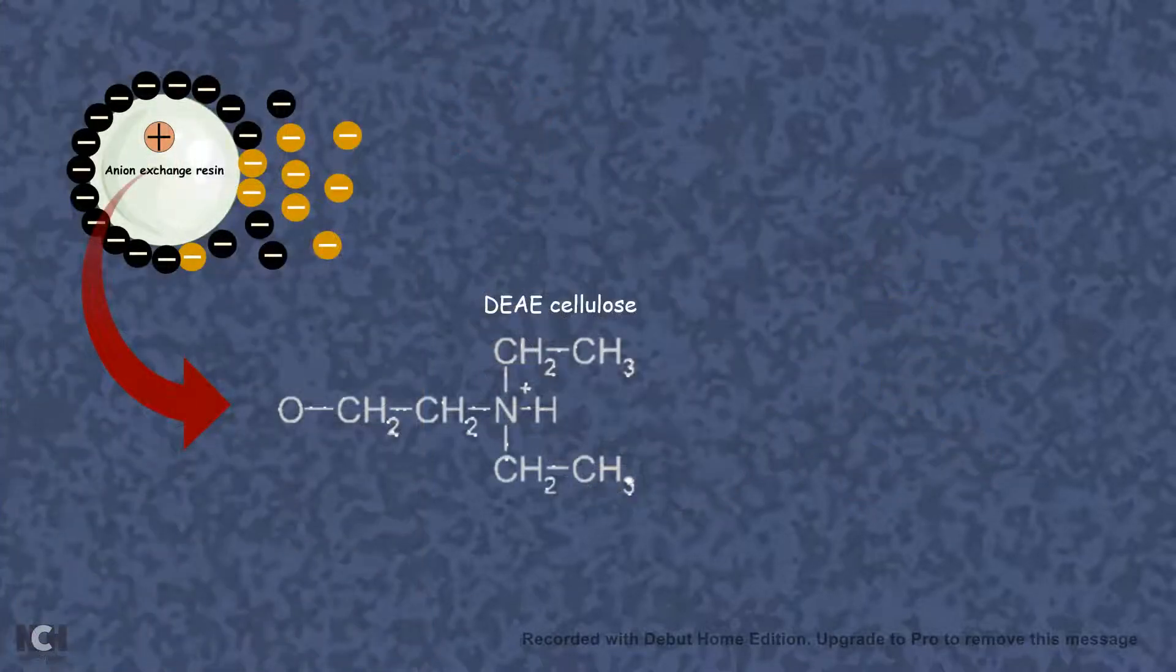A great example of the anion exchange resin which is popularly used is DAE cellulose, which has a positively charged tertiary amine group.